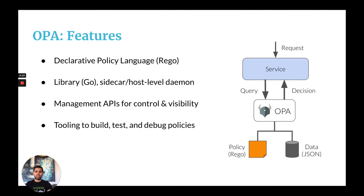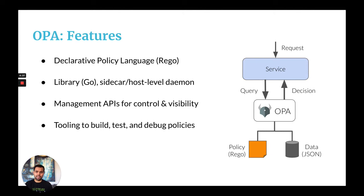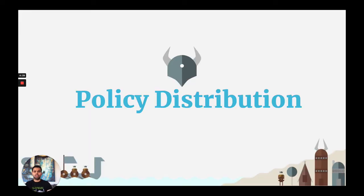So those were some of OPA's features: a high-level declarative language, multiple deployment models, management APIs for control and visibility, and a rich tooling set. So now let's talk about policy distribution.